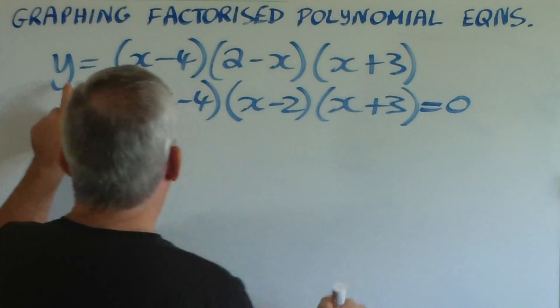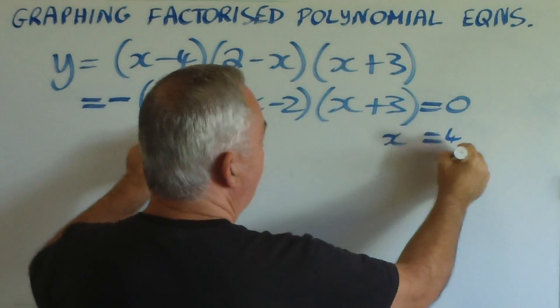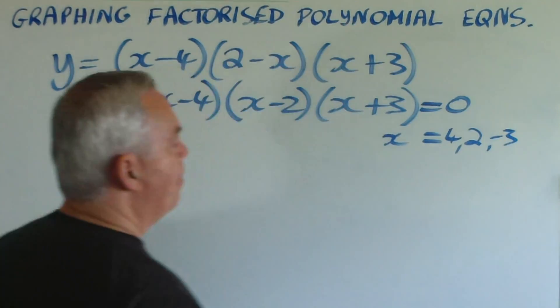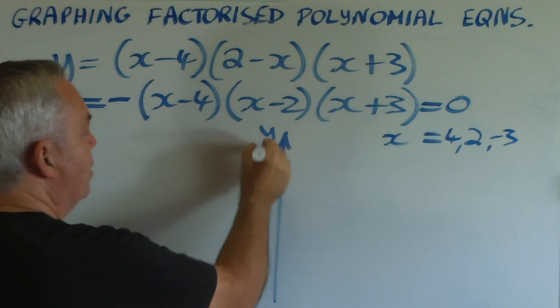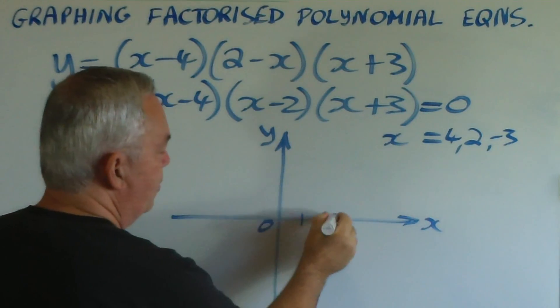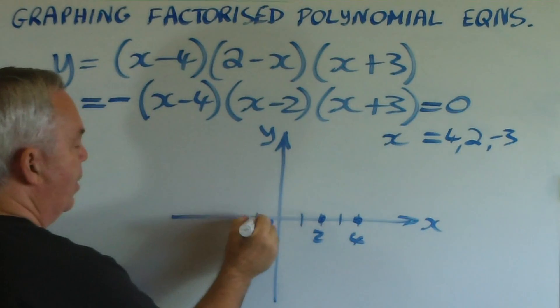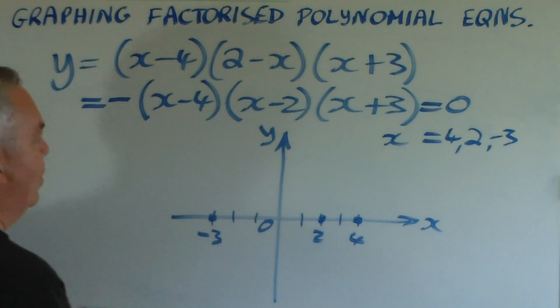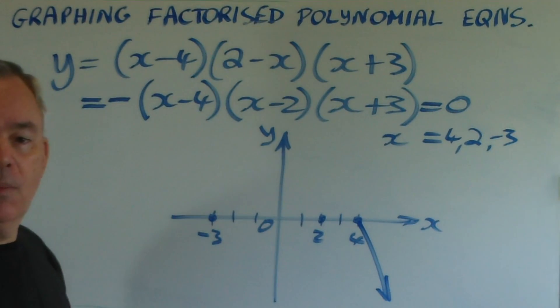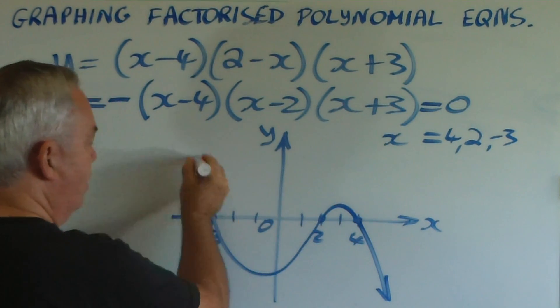To find the roots, we set y equal to zero, and our roots will be at 4, 2, and negative 3. When we graph the cubic equation, the roots are going to be at 4, 2, and negative 3. But remember, this minus sign means that the graph is going downwards when we go to the right instead of upwards. And that means the rest of the graph must go like this.